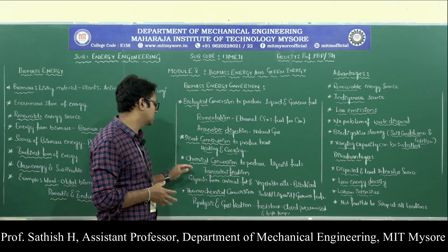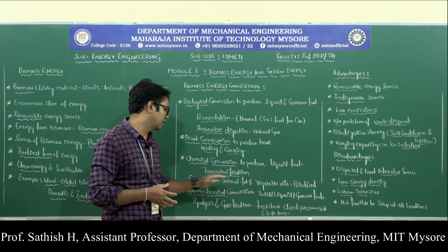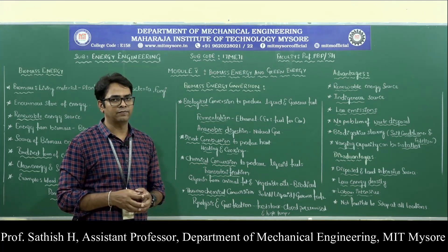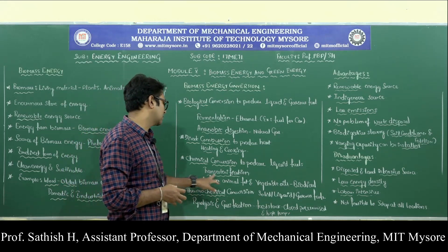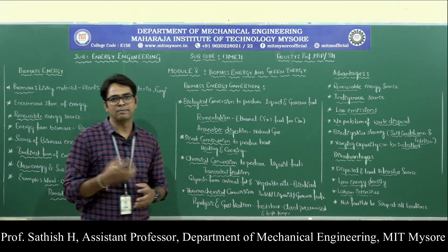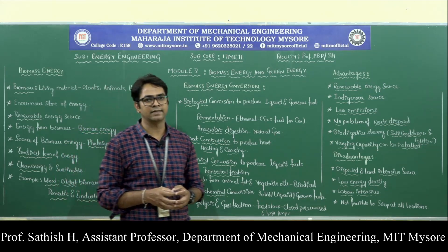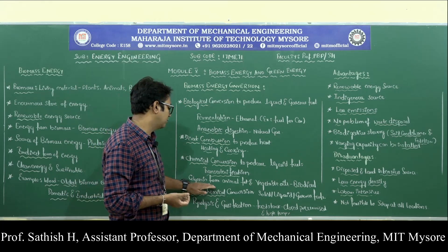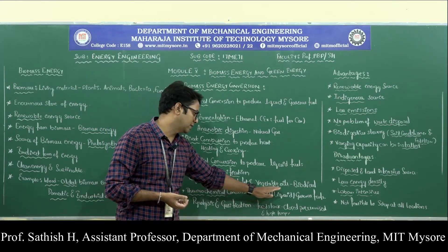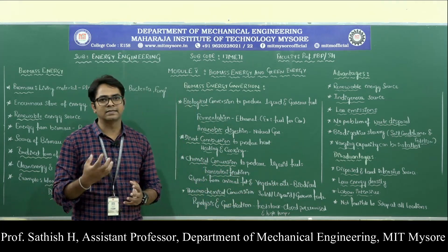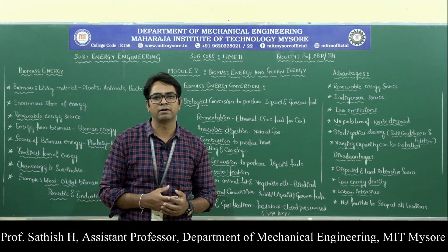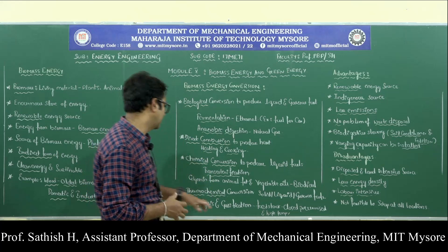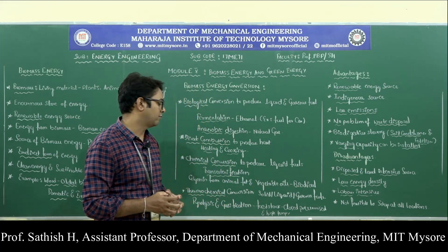Next we have chemical conversion to produce liquid fuels. The process used is called transesterification. For example, glycerin is extracted from animal fat and vegetable oils — this is called biodiesel.